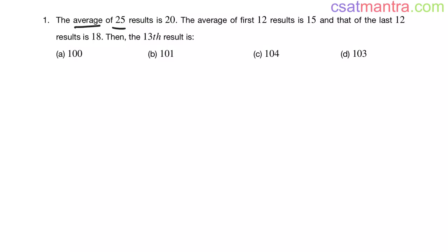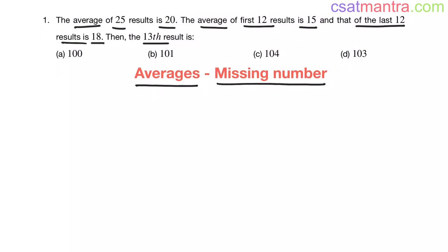The average of 25 results is 20. The average of first 12 results is 15, and that of the last 12 results is 18. Then the 13th result is. This problem is from averages chapter missing number concept. In yesterday's problem, we have seen how to find out the common number. In today's problem, we will see how to find the missing number when averages are given.